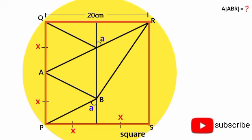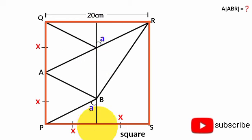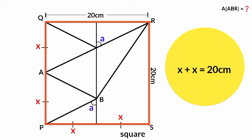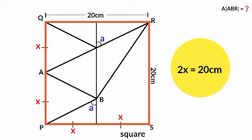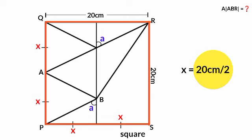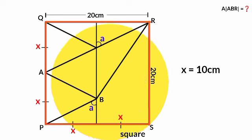Since PQRS is a square, all four sides are equal in length. Since one side is 20 centimeters, all sides are 20 centimeters. One side is divided into two segments of length X each, so X plus X equals 20 centimeters. That gives 2X = 20, so X = 10 centimeters — each of those segments is 10 centimeters.